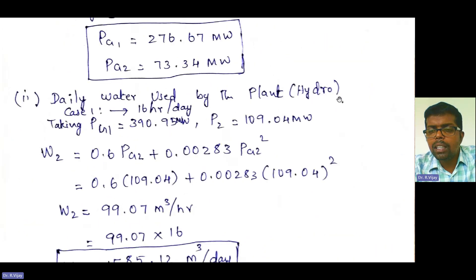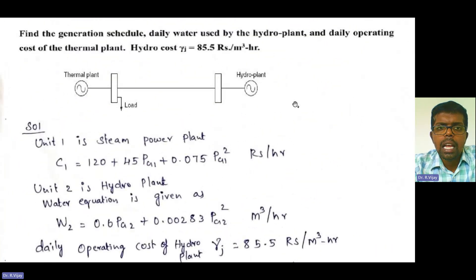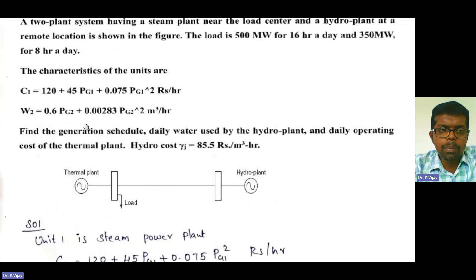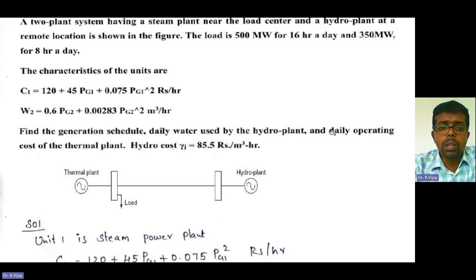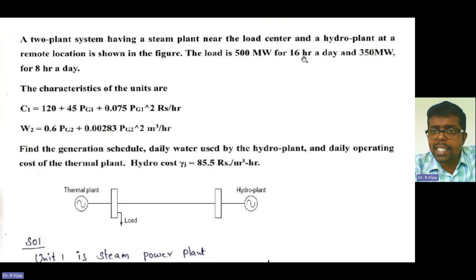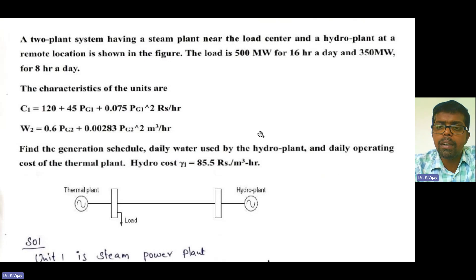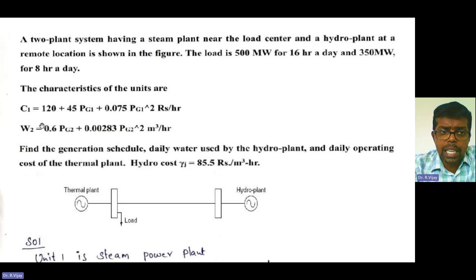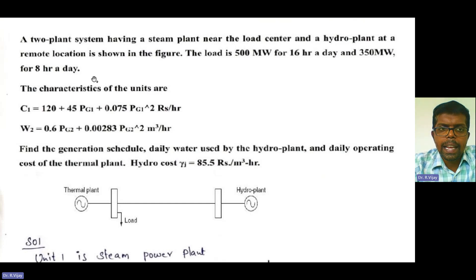This is the approach for calculating the operating cost of the thermal power plant and daily water usage for the hydro power plant. While solving this problem, you need to be very careful with the data and understand the problem clearly — what they ask for includes the generation schedule, water used by the hydro plant for 24 hours, and daily operating cost of the thermal power plant. Also note that W2 is the water equation; if you blindly treat it as a cost equation, the whole problem will be wrong. This is one important 10-mark problem that might be asked in your semester examinations.